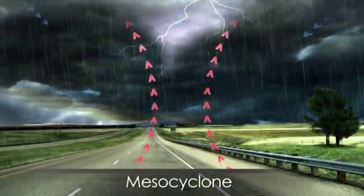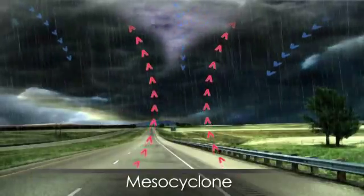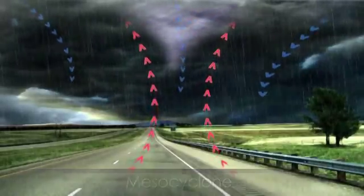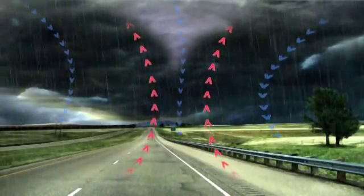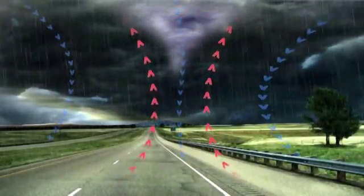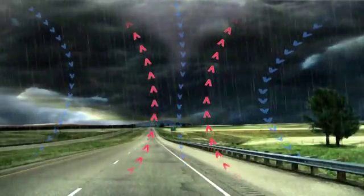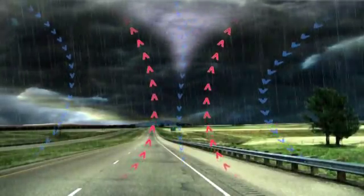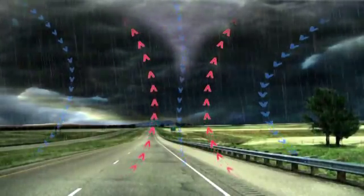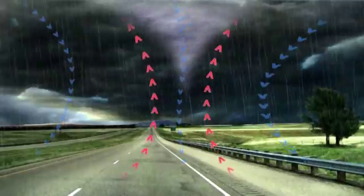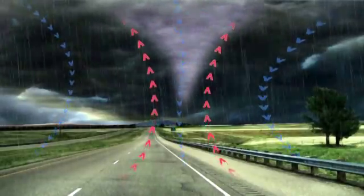As the supercell's rain falls, the air around the mesocyclone cools, causing it to sink. When this cool, downward-moving air meets the warm air rising from the Earth inside the spinning mesocyclone, the mesocyclone's rotation speeds up and forms a swirling wall of clouds.